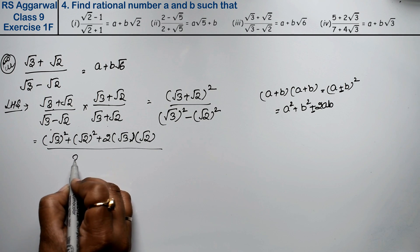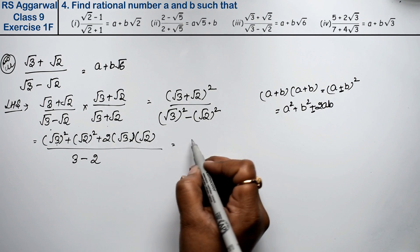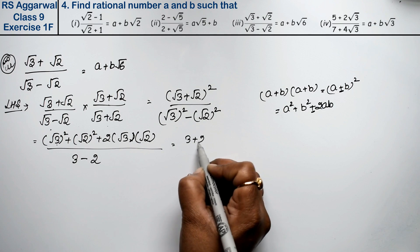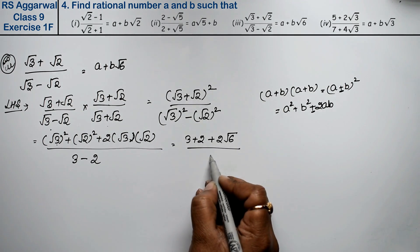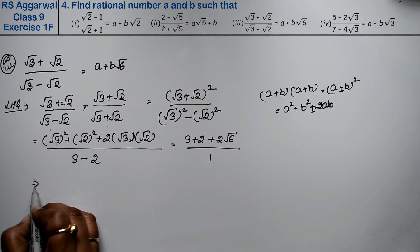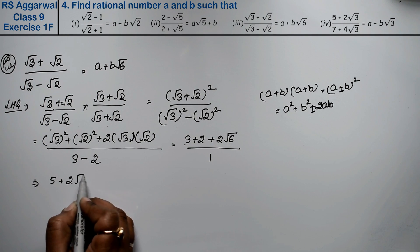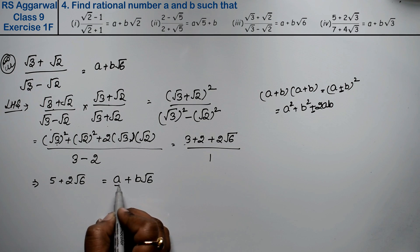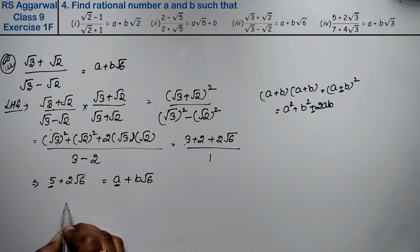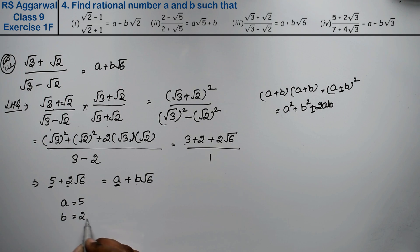Root 3 squared is 3, root 2 squared is 2, so the numerator is 3 plus 2 plus 2 times root 3 times root 2, which equals 5 plus 2 root 6, all upon 1. Comparing with A plus B root 6, we get A equals 5 and B equals 2, since root 6 cancels. That is the answer.